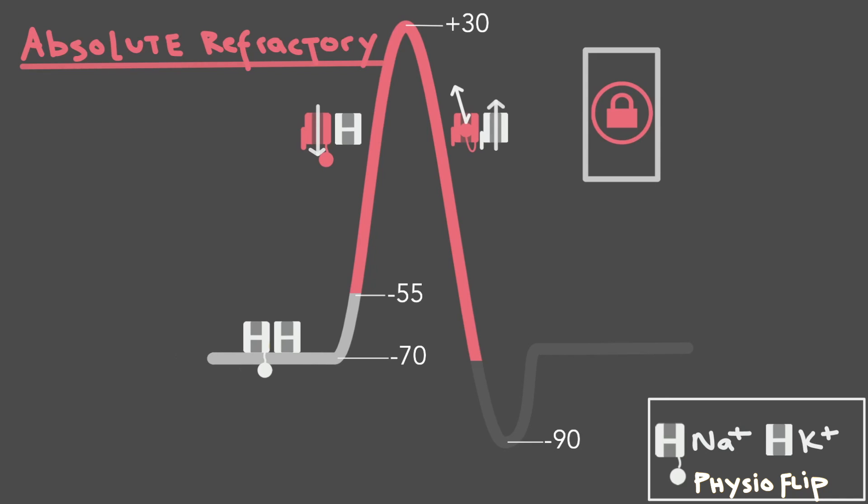Around minus 70 millivolts though, the lock on the sodium channel gets unlocked and the channel resets to its original shape. You can see that this sodium channel looks the same as it did at the beginning. As a result, starting here at around minus 70 millivolts, we can now start another action potential again, even though the current one is not yet over. So the absolute refractory period is finally over.